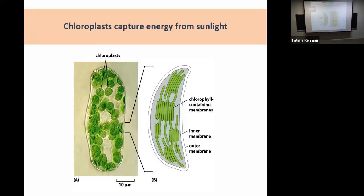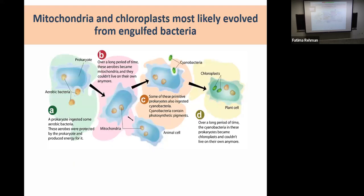If you were a plant cell, you'd have additional ways to prepare energy. Chloroplasts are the organelles present in plants or photosynthetic organisms, containing chlorophyll-containing membranes. Similar in some ways to mitochondria, chloroplasts can also capture energy from sunlight. They have stacks of membranes inside their structure to help capture sunlight with chlorophyll, use it to make glucose, and then break that down to make energy.